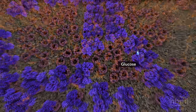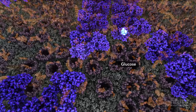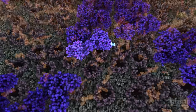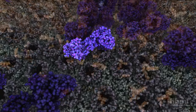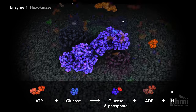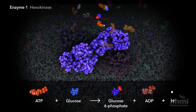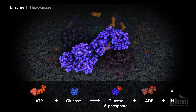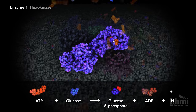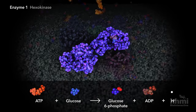Sitting on this abundant supply of ATP is the first enzyme of the glycolysis pathway. The reaction of the first enzyme transfers a phosphate group from ATP to glucose, creating glucose 6-phosphate.